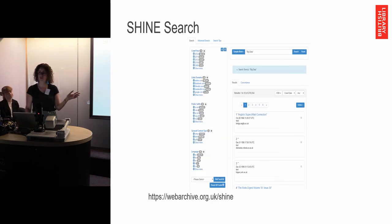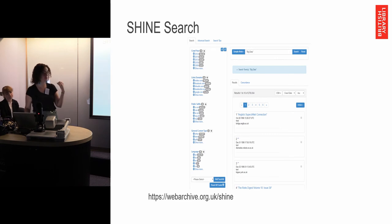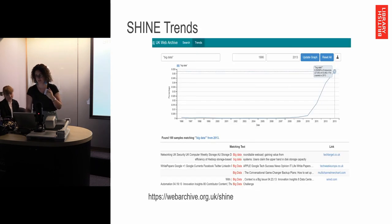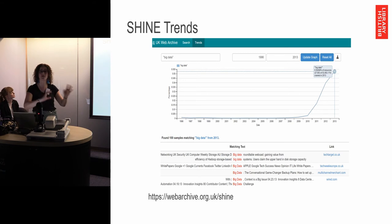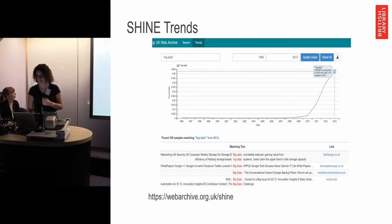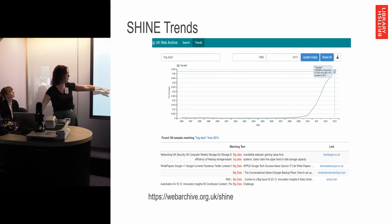Then you have the Shine interface, which is all open access and has much better search functions with search tips to help you refine your search, and it has faceted searching as well. You also have trends analysis, so you can see trends in how popular certain phrases were over time. In the early .UK web space of the late 90s it was dominated by academic publishing, so some terms seem more popular than they really are, while the later part of the dataset is more general publishing with lots of different content. You can run a sample of 100 sites and they link out to the Internet Archive's Wayback capture.